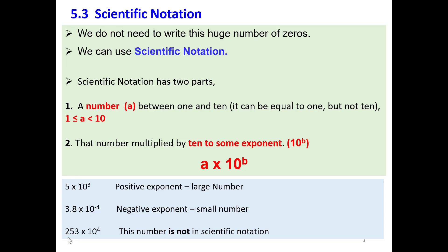Let's check the third number. Is this number in scientific notation? The answer is no. Why? Because in front we have 253. This number is not between 1 and 10. Even though it's multiplied by a power of 10, the number in front is not between 1 and 10.